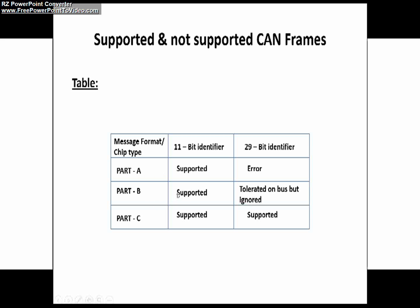Now coming to Part B — as you can see in this table, the 11-bit identifier frame format is supported, meaning it can send and receive it. But for the 29-bit identifier frame format, this is the reason I called Part B CAN 2.0B passive: it can tolerate 29-bit identifier frames. That means if you are trying to send a 29-bit identifier through this controller, it will not give any error because it can tolerate it. However, these frames will be ignored by the Part B CAN controller.